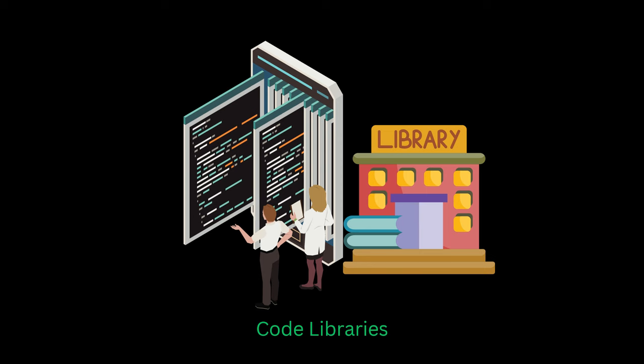For example, your application might need to communicate over the network, manipulate images, or manage user data. All these basic functionalities are already provided in libraries, so instead of developing everything from scratch, you use these libraries and concentrate on the unique aspects of your application. For instance, if I'm developing a new compression application, I wouldn't develop the whole compression algorithm from scratch — I'd simply use a library like liblzma for the backend.